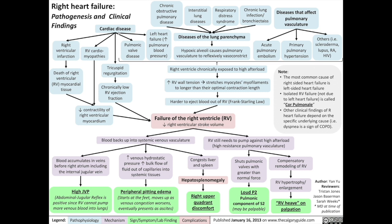Two other types of cardiac disease include pulmonic valve disease as well as left heart failure, which increases the pulmonary blood pressure. These two cardiac conditions expose the right ventricle to high afterload — they increase the pressure against which the right ventricle must pump. That increases right ventricular wall tension, stretching the myocytes' myofilaments to longer than their optimal contraction length, making it harder for the right ventricle to eject blood. Diseases of the lung parenchyma and diseases that affect the lung vasculature also contribute to right ventricle failure via this mechanism.